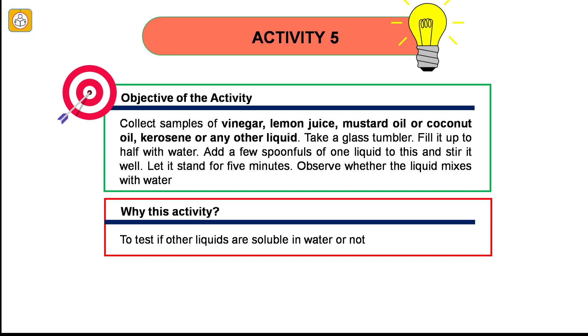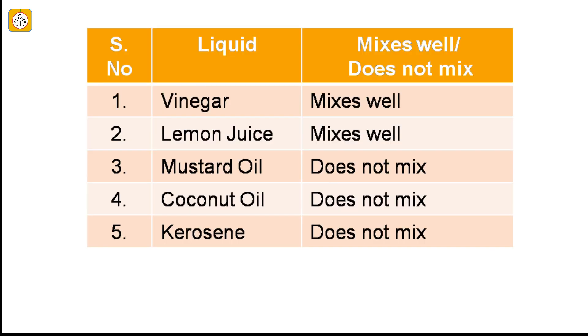Activity number 5: Collect samples of vinegar, lemon juice, mustard oil or coconut oil, kerosene or any other liquid. Take a glass tumbler, fill it up with water, add a few spoonful of one liquid to this and stir it well. Let it stand for five minutes. Observe whether the liquid mixes with water. The objective of this activity is to test if other liquids are soluble in water or not. We see that vinegar and lemon juice mixes well with water whereas mustard oil, coconut oil and kerosene oil which are lighter in density than water don't mix and float on the surface of water.